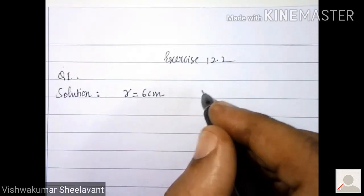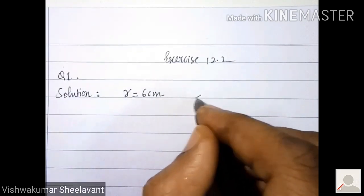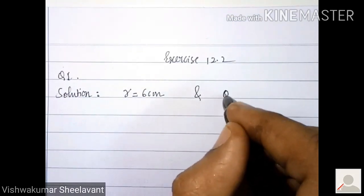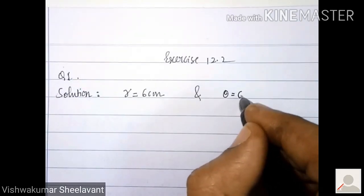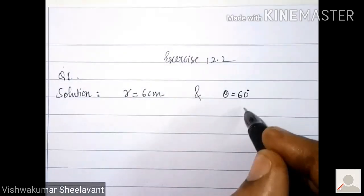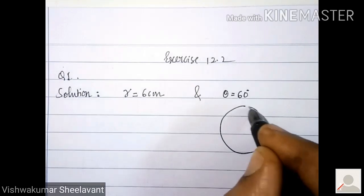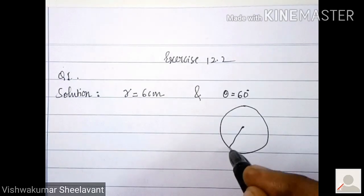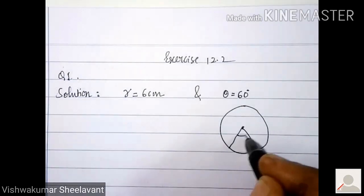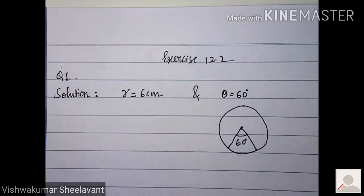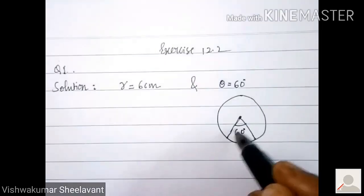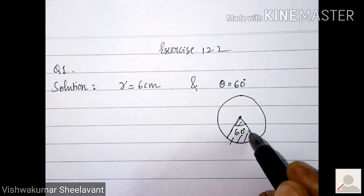Given: radius 6 centimeter and angle of sector 60 degree. To find: the area here of the sector.